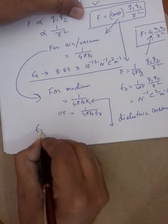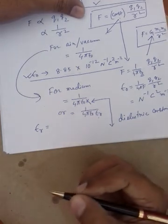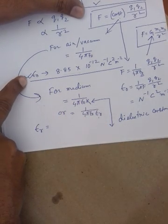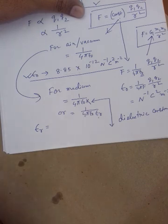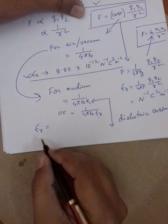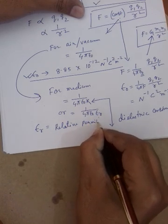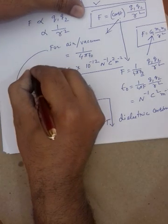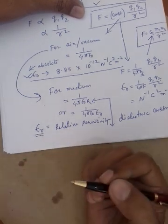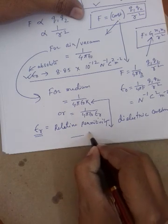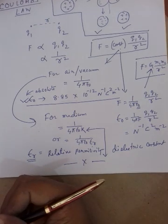εᵣ is called relative permittivity — note that ε₀ was absolute permittivity with value 8.85 × 10⁻¹² N⁻¹·C²·m⁻², while εᵣ is relative permittivity. Since it is relative, it is unitless and dimensionless. So today we discussed what Coulomb's Law is, and how to use Coulomb's Law I will show in my next video. Thank you, students.